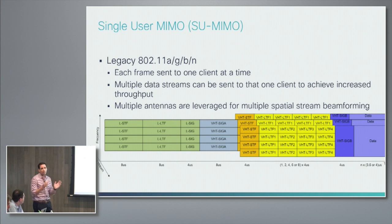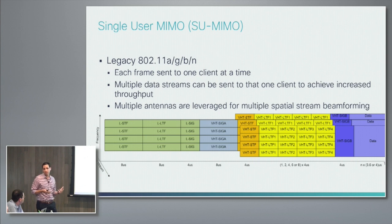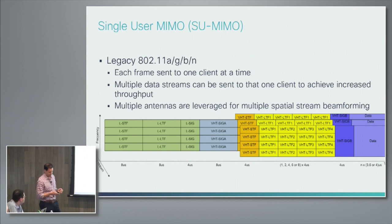But multiple antennas are required for that on the client. You can only send a number of spatial streams equal to the number of receive chains on the client, and you have to have at least that many antennas on the AP as well. Any additional antennas are going to be used for beamforming the signal to the client so that it can receive optimally and has higher SNR.